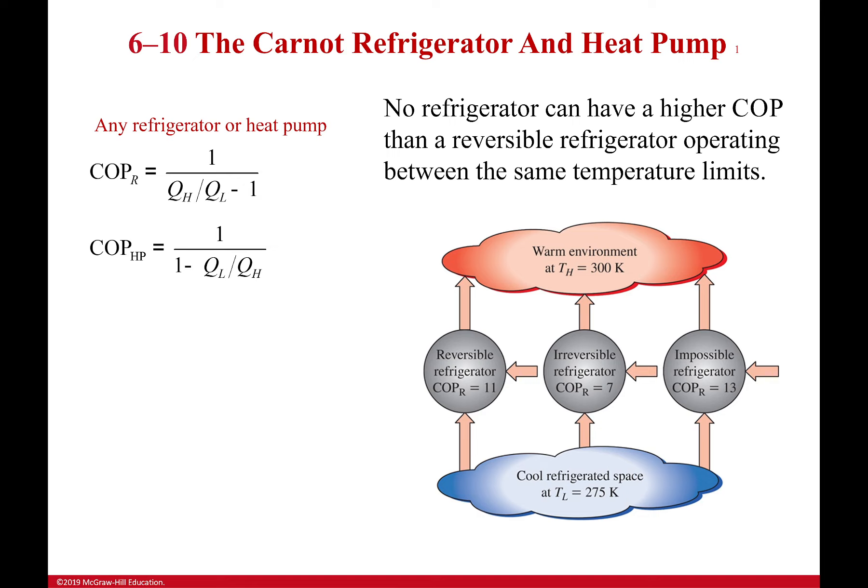Look over here on the right. If I have a perfect reversible refrigerator, that means for my set environment in the cold and warm spaces, I can determine what my max coefficient of performance will be, and that is for a reversible system, for the Carnot system. In this case, that would be a max of 11.